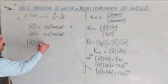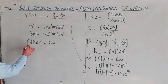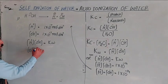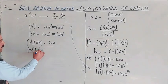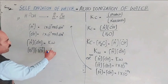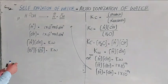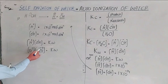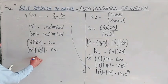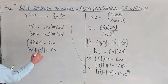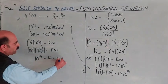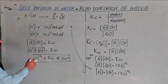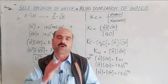Hydrogen ion concentration value is 10⁻⁷ times hydroxide ion value 10⁻⁷ equals Kw. Multiplying: 10⁻⁷ × 10⁻⁷ = 10⁻¹⁴. Minus 7 plus minus 7 equals minus 14. So Kw at 25°C equals 1 × 10⁻¹⁴. These were all the concepts about the self-ionization of water, auto-ionization of water.